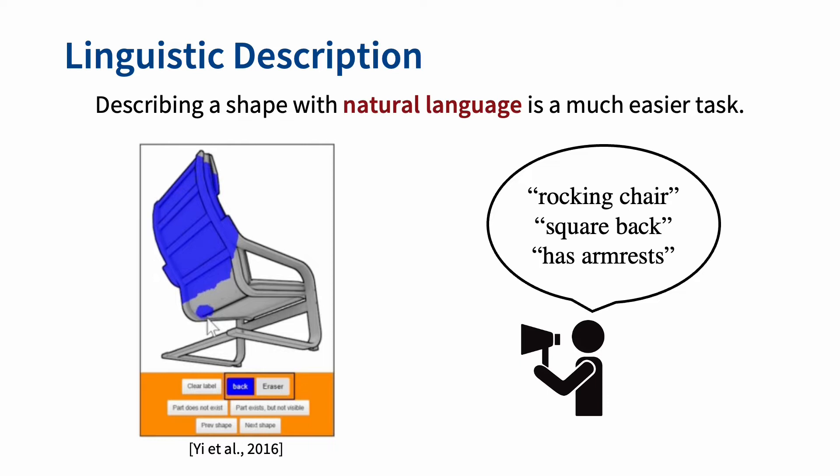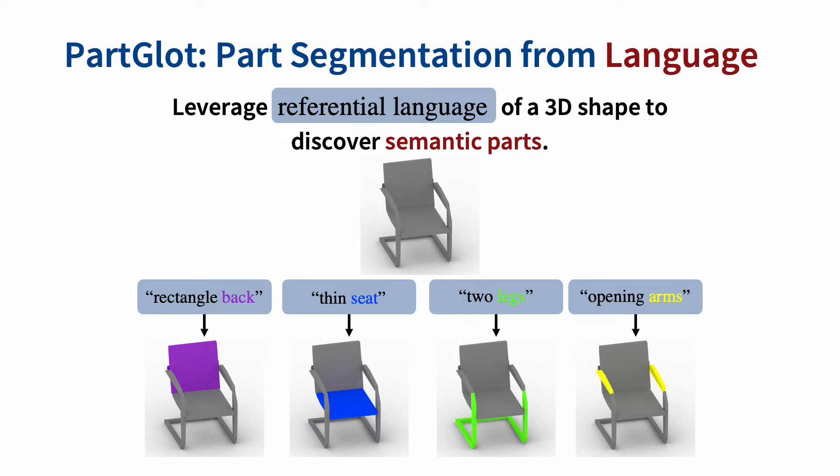In comparison, describing a 3D shape with natural language is a much easier task that does not require any expertise or lots of work. Hence, we propose PartGlot, a framework for learning part segmentation only from linguistic descriptions of a shape, without any part annotations.